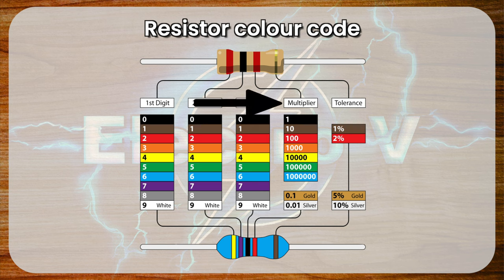Fourth band indicates the tolerance of the resistor, or how much its actual resistance value can vary from the indicated value. Common tolerance values include 5% gold, 10% silver, and 20% no band.